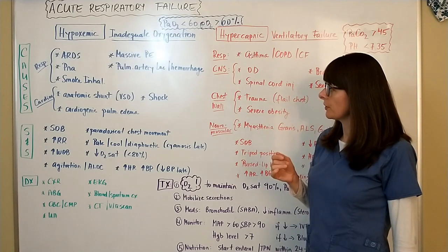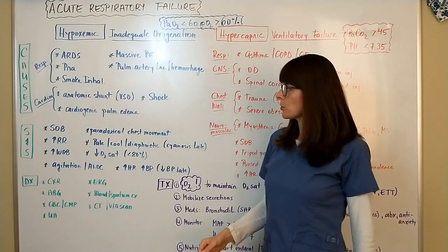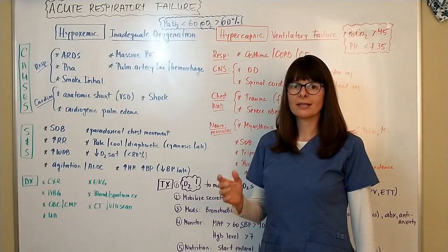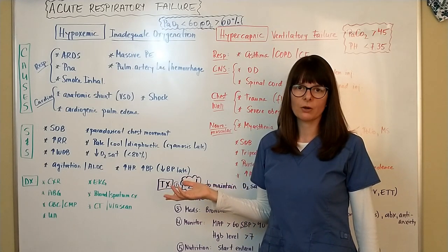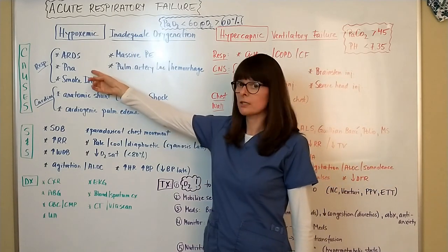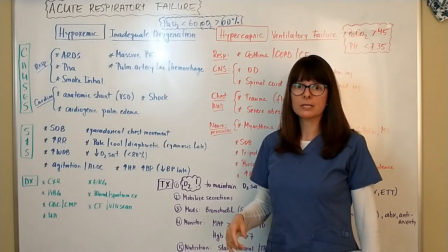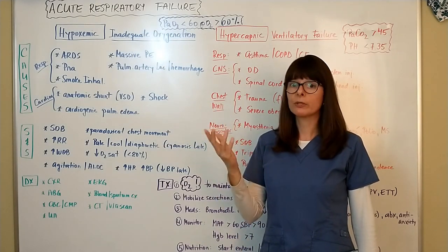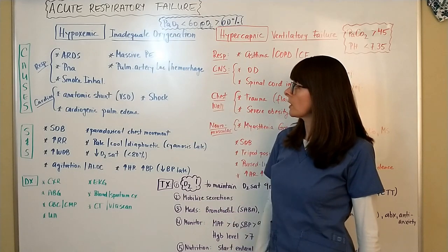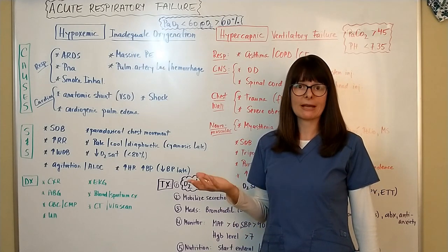Let's look at hypoxemic respiratory failure. Causes can usually be due to respiratory issues or cardiac issues. Respiratory issues that cause acute respiratory failure: number one is probably ARDS, acute respiratory distress syndrome. Certainly a significant or bad pneumonia can lead to respiratory failure as well as smoke inhalation. A massive pulmonary embolus where the blood flow to the lungs is impaired and we don't have enough oxygen circulating to the lungs. Another cause is pulmonary artery laceration or massive hemorrhage in the thorax such as from massive chest trauma.